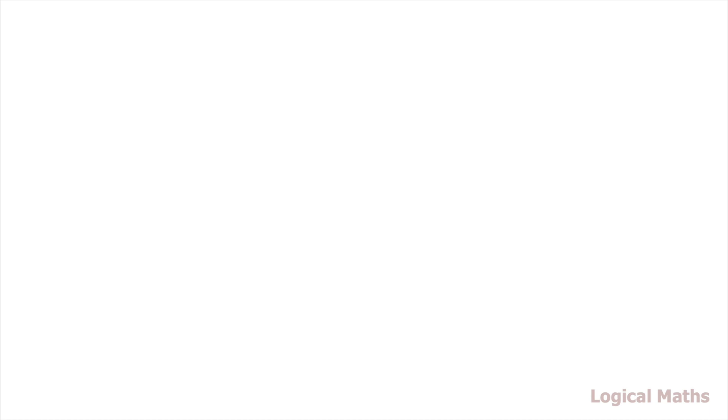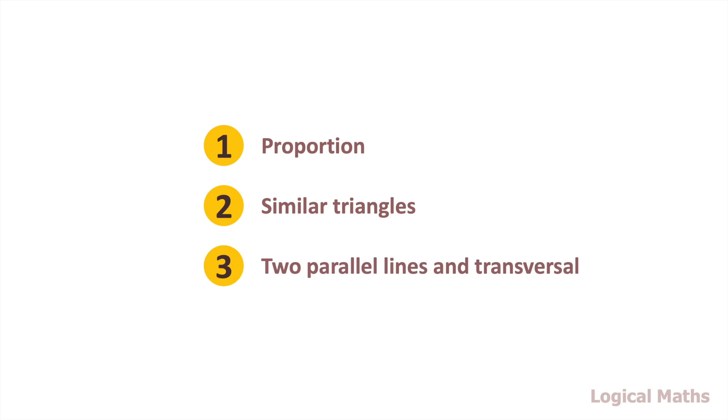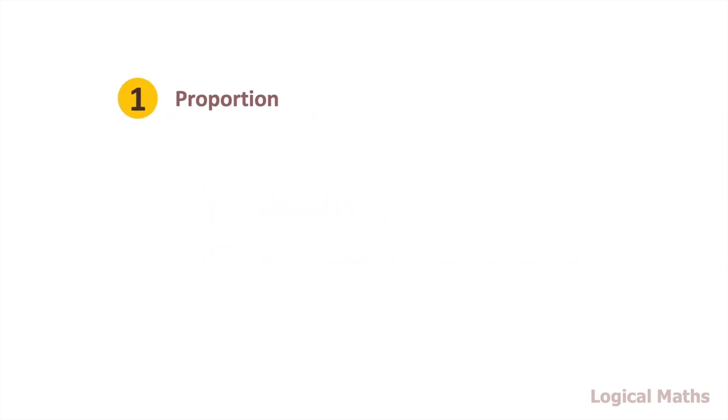Before we move further, we need to refer to some theoretical material. The first one is proportion, the second one is similar triangles and the last one is two parallel lines and transversal. Let's start with proportion.